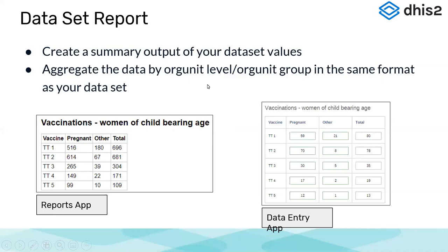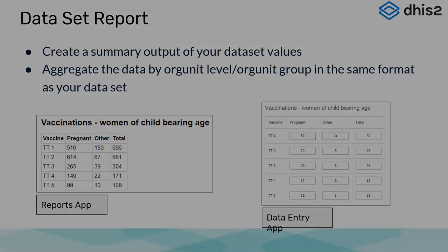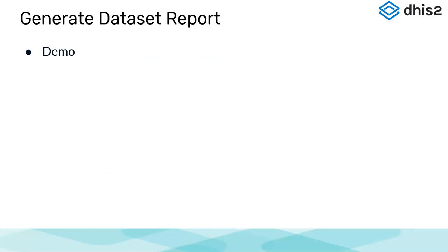We'll start with the data set report component. It creates a summary output of your data set values — you can aggregate data by org unit level or group in the same format. This is bound with the data entry app. In data entry, data elements and indicators are accumulated into a data set which you report for a certain period. A data set could be daily, monthly, weekly, quarterly, or yearly, and it's assigned to an org unit where data is reported. The data set report shows the data entered into a particular data set for a particular period and org unit — we need to see the relationship between the data set and the data set report.